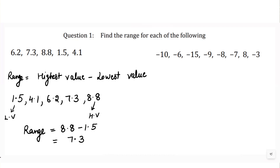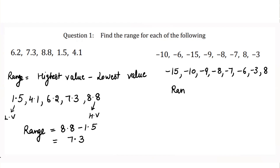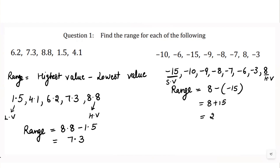The next dataset includes negative and positive values. Arranged in order: −15, −10, −9, −8, −7, −6, −3, 8. The smallest value is −15 and the highest is 8. Range equals 8 minus (−15), which is 8 plus 15, equals 23. Note that negative numbers with larger absolute values are smaller — for example, −15 is smaller than −3.